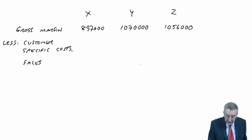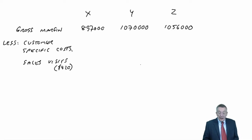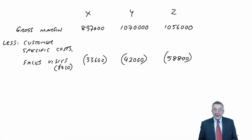First of all, what about these sales visits? X, there are 80 visits. So 80 visits at 420 each time is costing us 33,600 to visit X. Whereas Y, 100 visits at 420 each time is 42,000. And Z, 140 visits at 420 each time is 58,800. It's just like activity-based costing, but we're applying the costs here, not to individual products, but to the customers.